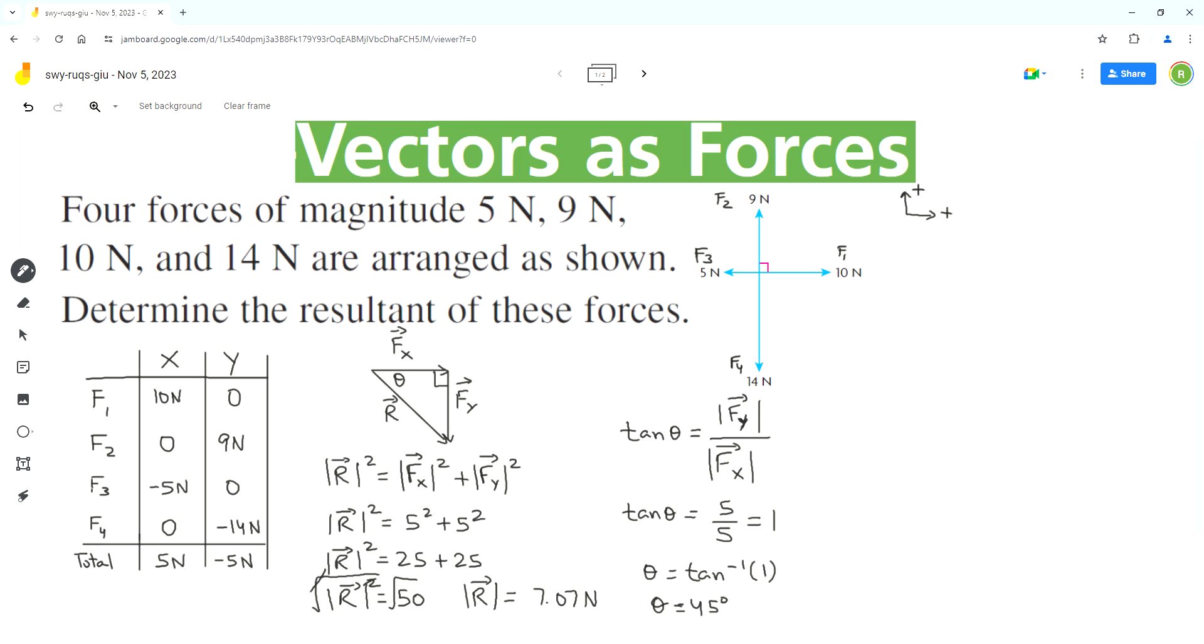Theta equals 45 degrees. So that means the resultant is 7.07 newton. That's the magnitude and the direction is...